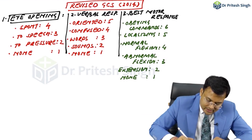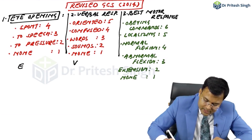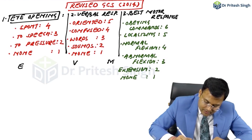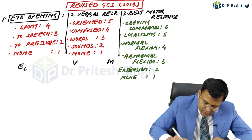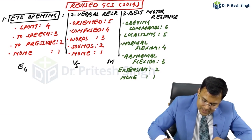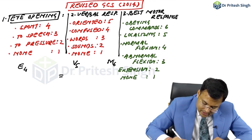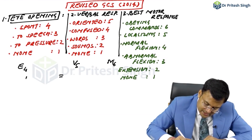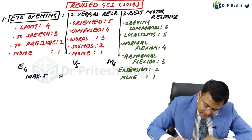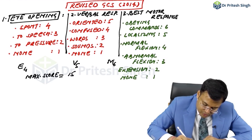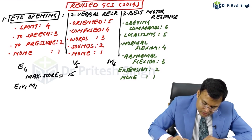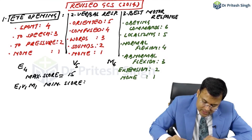Here you can see: E (Eye Opening) maximum is 4, V (Verbal Response) maximum is 5, and M (Motor Response) maximum is 6. So the maximum GCS score is 15. The minimum score is E1, V1, M1, giving a minimum score of 3.